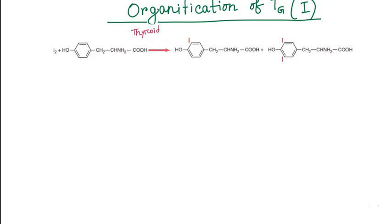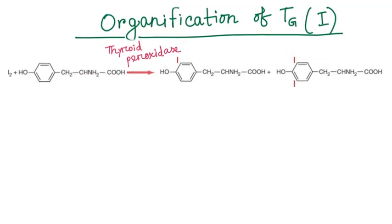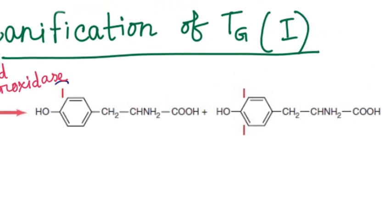This process occurs within seconds to minutes because the oxidized iodine is associated with thyroid peroxidase enzyme. So here we see another function of thyroid peroxidase. Iodine may bind at one or two sites of tyrosine. If one iodine binds with one tyrosine molecule, monoiodotyrosine will form.